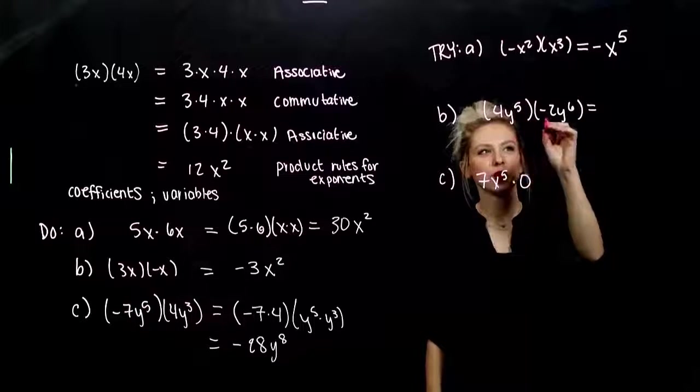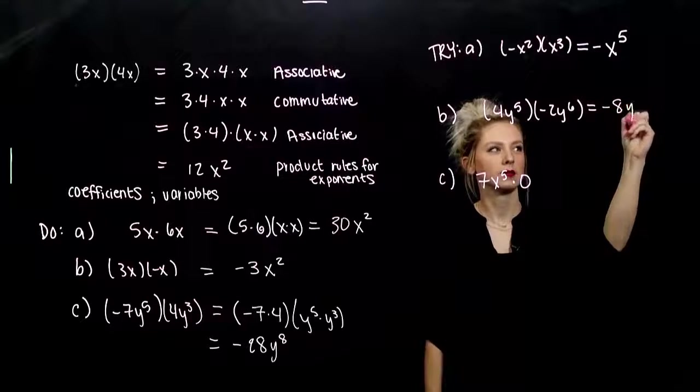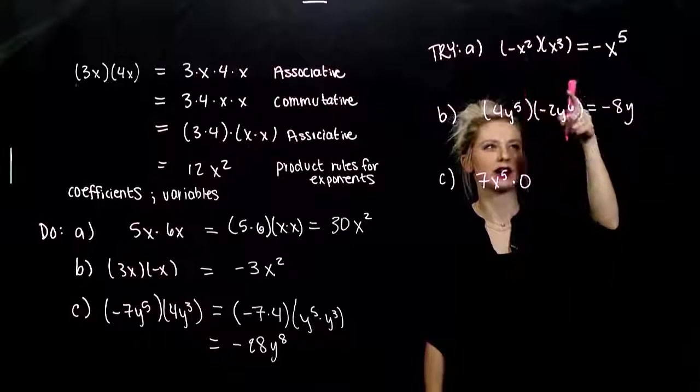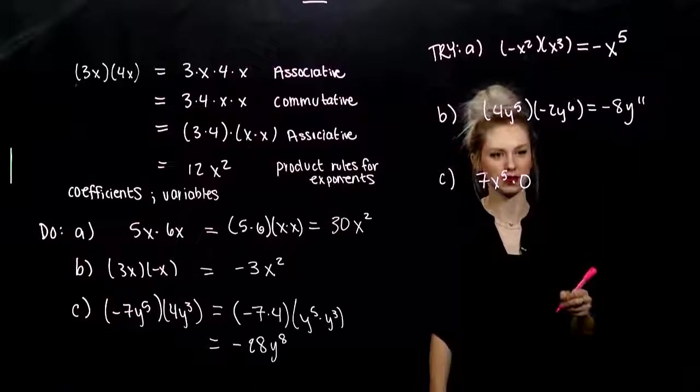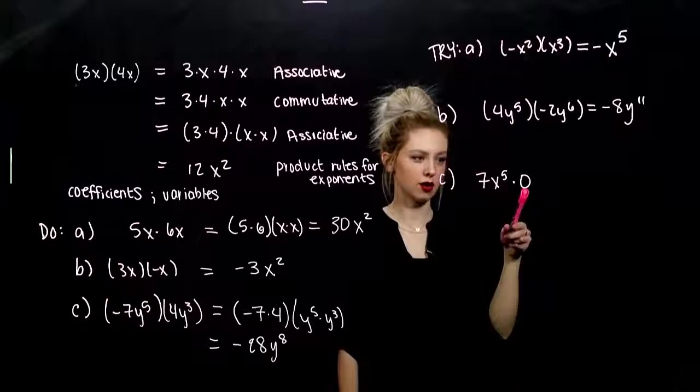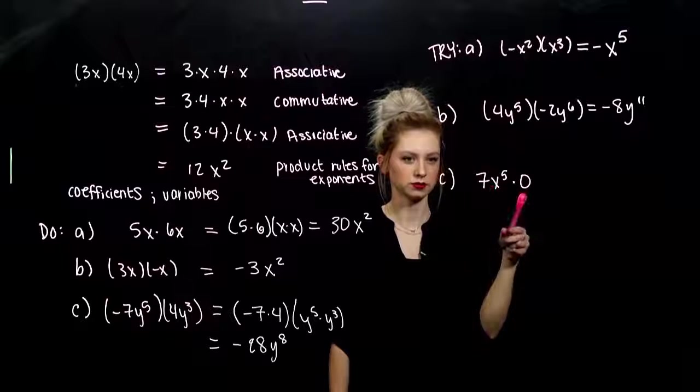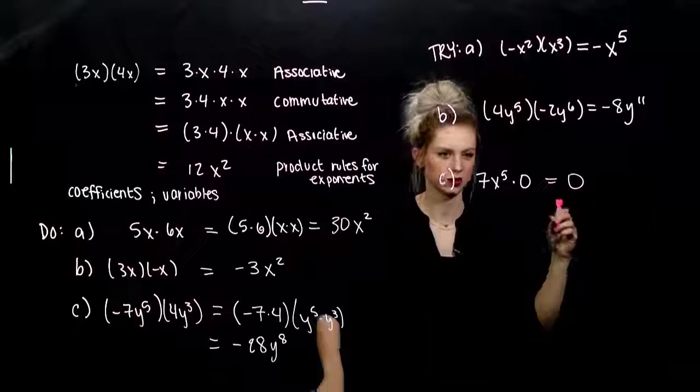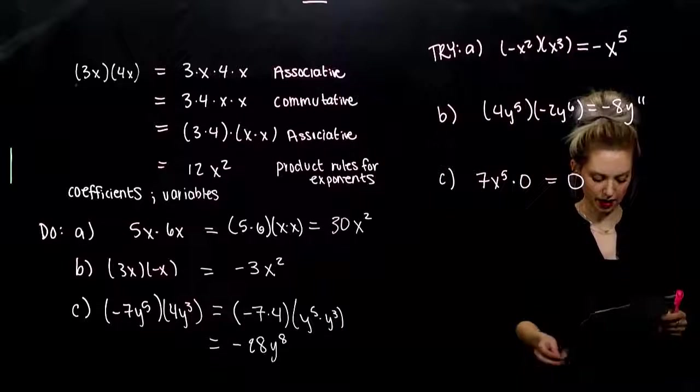And, same story down here. Multiplying the coefficients, I've got negative eight. Same base with multiplication. So, we add these exponents together. We've got eleven factors of y. And, in this last one, they are both monomials. But, zero times anything is always zero. Double check. Checking in that guy. It's been a little bit.